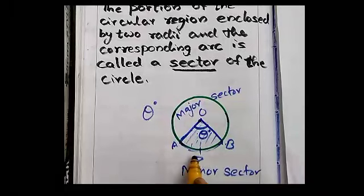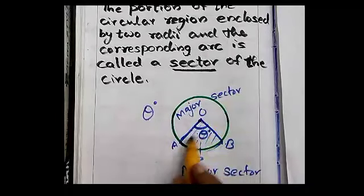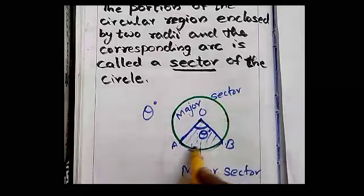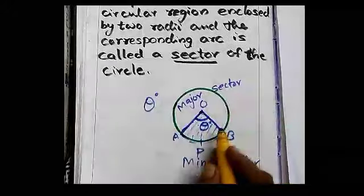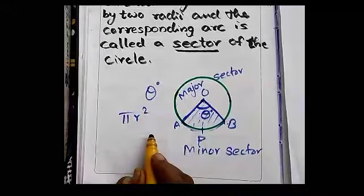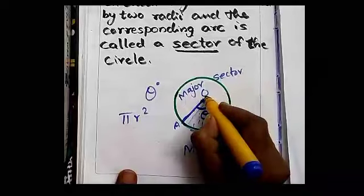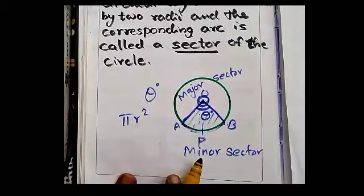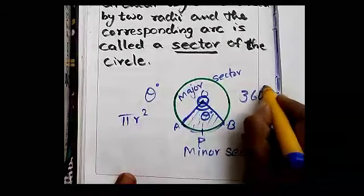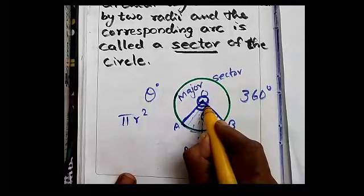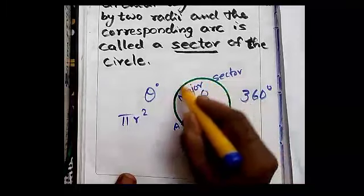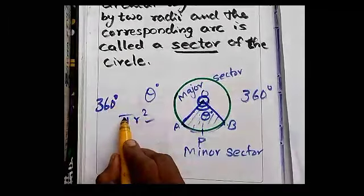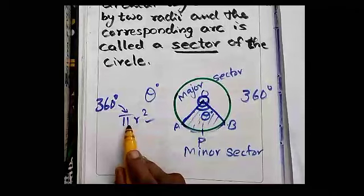Now we are going to find the area of sector OAPB. One circle is there — the area of the circle is πR², which you have already studied. The angle around the center O is 360 degrees. So corresponding to the central angle of 360 degrees, we have the total area of the circle, which is πR².